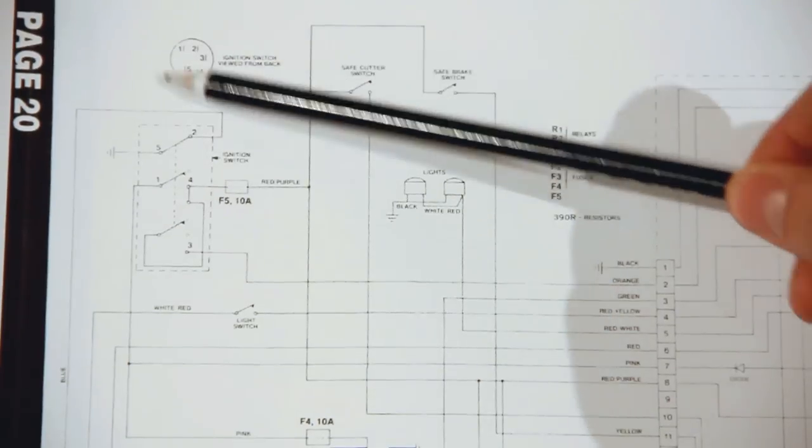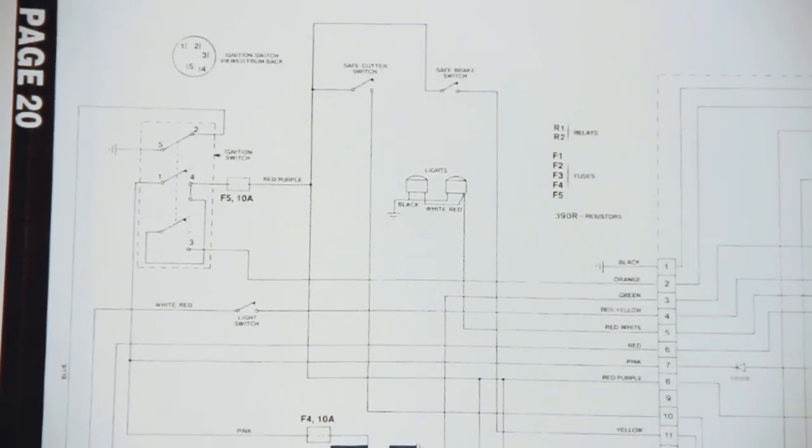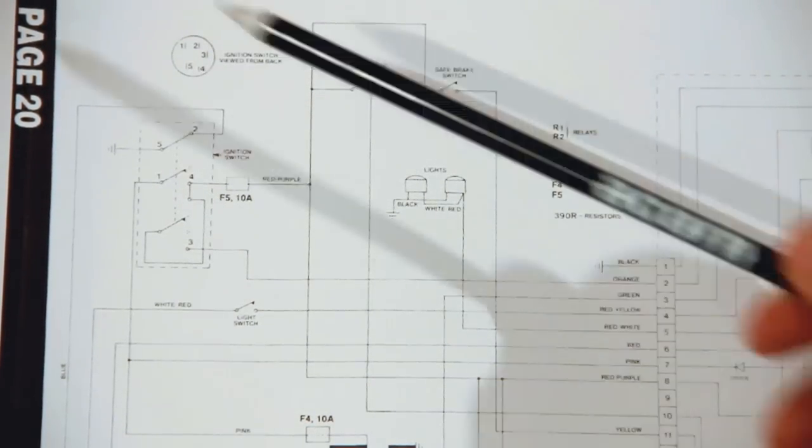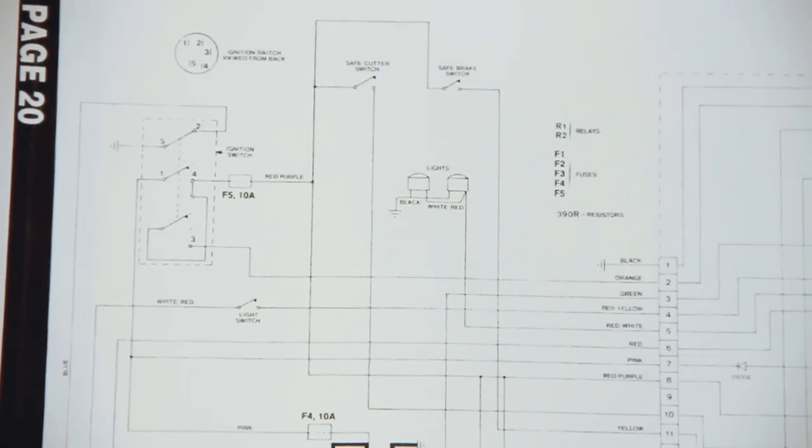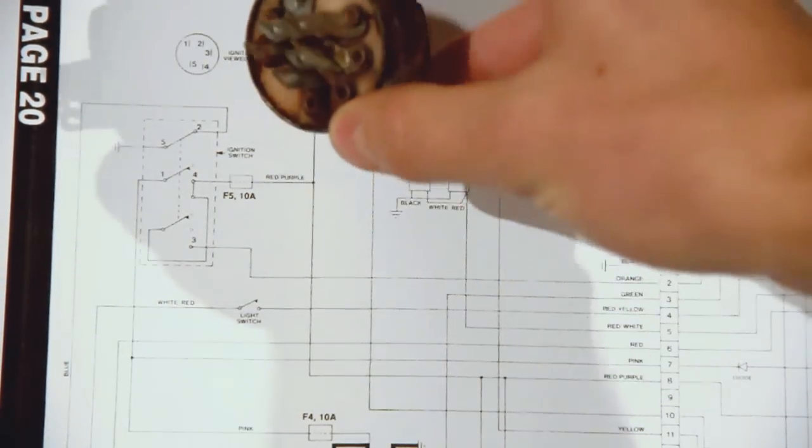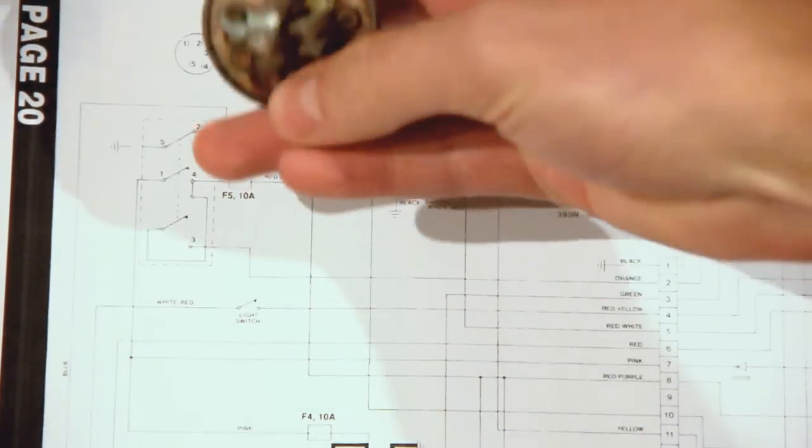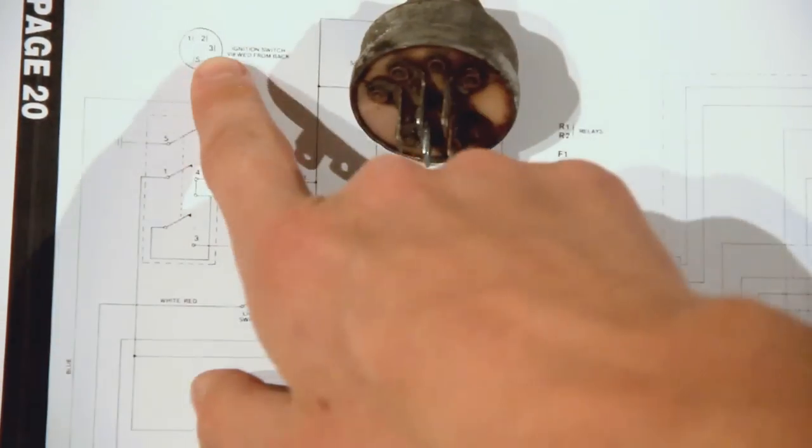But just to keep it simple, they have basically put a circle there, because that's what the real ignition barrel looks like, with the five terminals on. So obviously this is an ignition barrel from a lawnmower, and we've got our five terminals, and that's what they've numbered here.